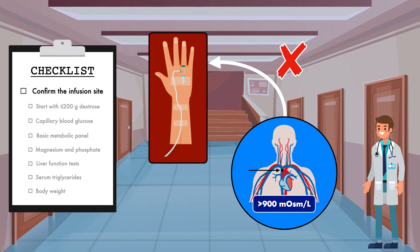This significantly increases the risk for complications like phlebitis and loss of IV access. You can safely run a formulation that has been designed for peripheral access through a central catheter if needed.